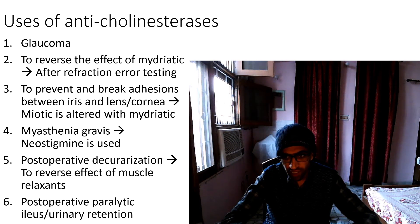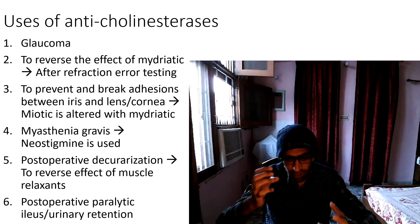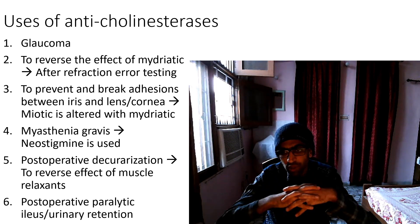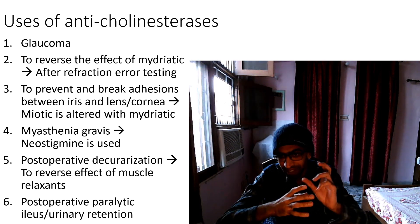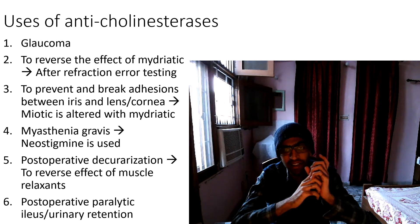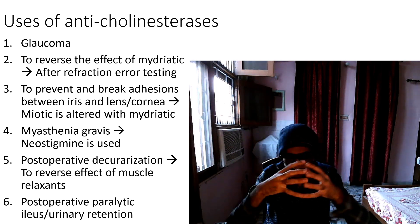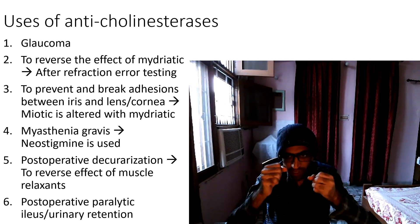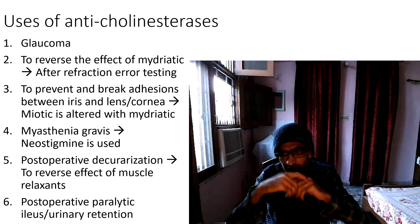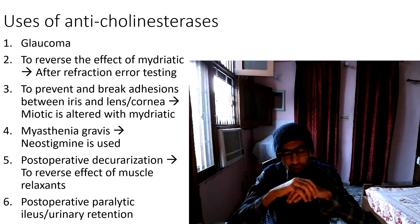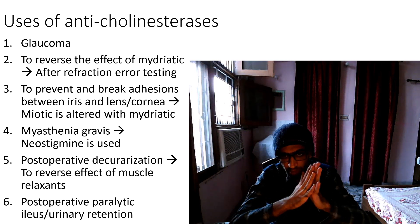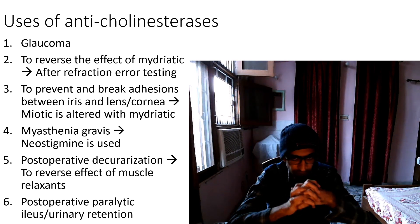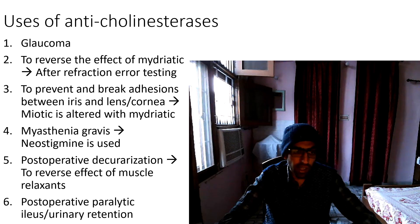The second use is to break adhesions. Adhesions form between the iris and lens, or between the iris and cornea — they are sticky bonds that bind two structures together, like a gum. We alternate miotics like pilocarpine with mydriatics to break these adhesions.